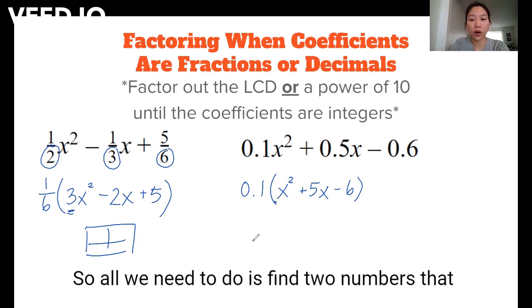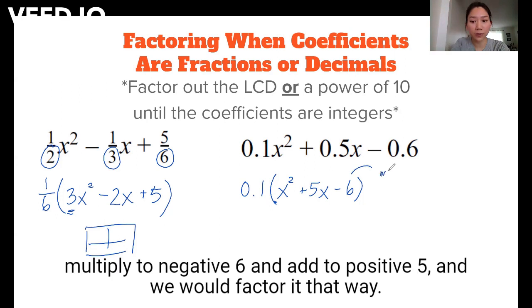So now this time we have a trinomial where the leading coefficient is 1. So all we need to do is find two numbers that multiply to -6 and add to positive 5, and we should factor in that way.